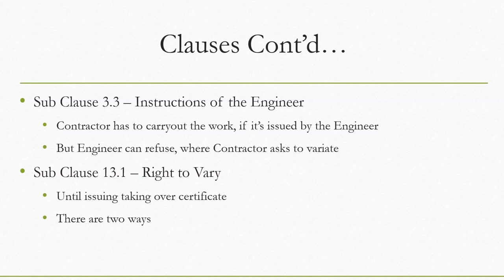The second way is that the engineer can ask the contractor to submit a proposal, rather than directly giving an instruction. Alternatively, the contractor can identify some change themselves, prepare a proposal, and give it to the engineer. Sometimes when contractors receive construction drawings, they may identify changes and submit a proposal accordingly.